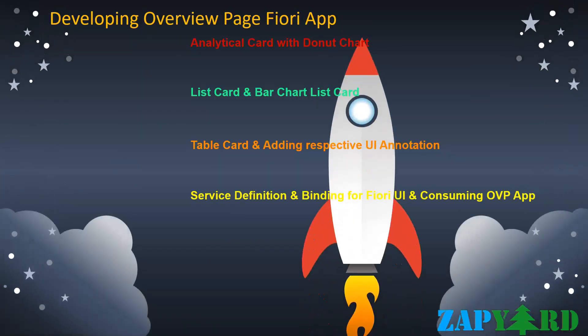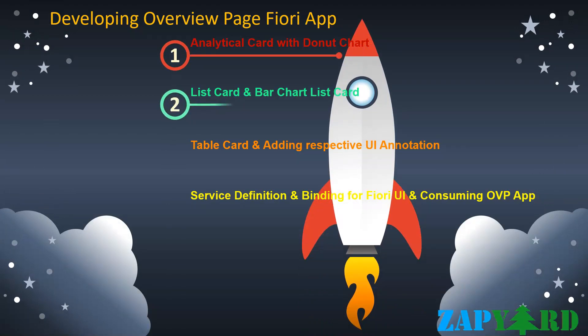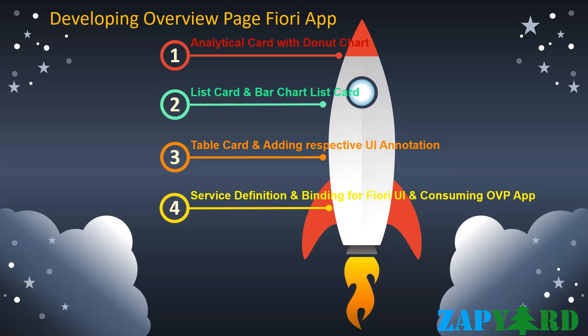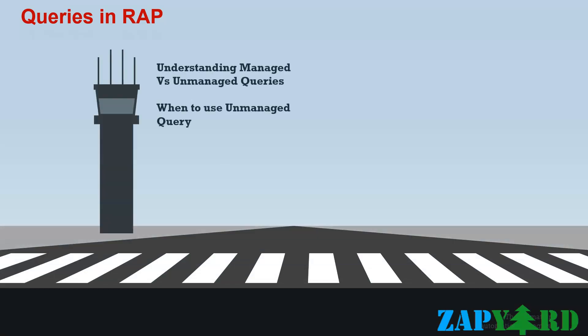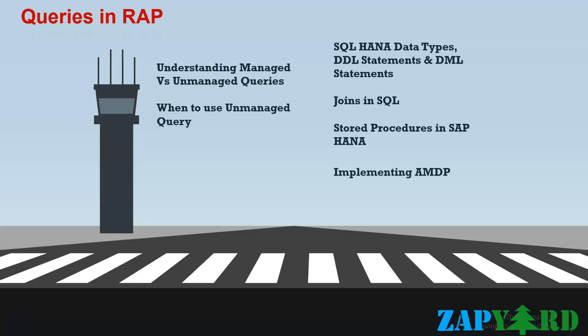Next, we will dive deep into the overview page SAP Fiori Elements application type. We will create an analytical overview page step by step — from CDS view creation to business service definition and the required UI annotations. List cards, bar charts, and table cards will be added to the overview Fiori page, which we will deploy on-premise. Queries provide read-only access to CDS data models — they are CDS data models without behavioral definition and implementation, and serve as the connecting link between OData service requests and the CDS data model. We will distinguish between managed and unmanaged queries and when to use one over the other.